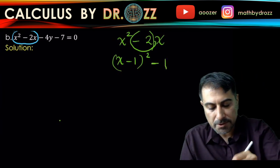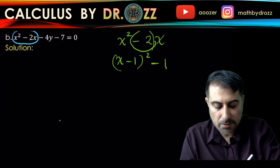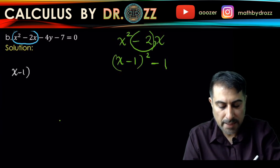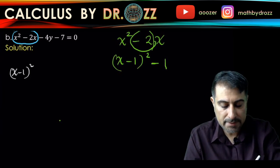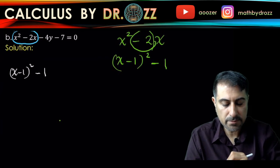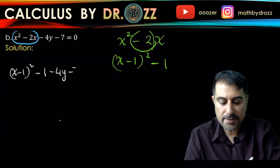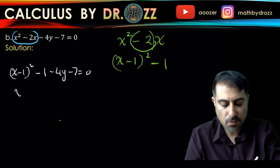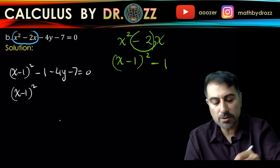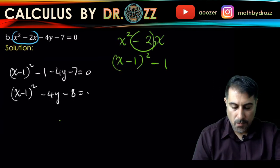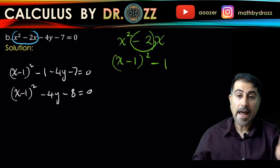But I don't have plus 1, so I have to sort of compensate that. In other words, this term here can be written as x minus 1 quantity squared minus 1. I still have minus 4y minus 7 equals 0.